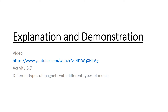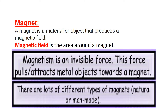Materials attracted by a magnet are called magnetic materials, and those not attracted are non-magnetic. A magnet is a material which produces a magnetic field. The magnetic field is the area around the magnet where an invisible force acts. This force is called magnetism, because it pulls or attracts metal objects towards a magnet.